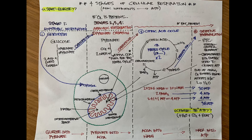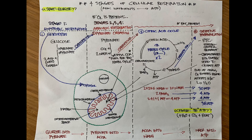Cell respiration takes place in four stages. The first stage is anaerobic glycolysis — of the four stages, only the first one is anaerobic. This is simply where glucose is broken down into a couple of pyruvates. In anaerobic glycolysis, the glucose is split into pyruvate; you get a couple of ATP out of it net, because it actually makes four but you only net two, and a couple of NADH.